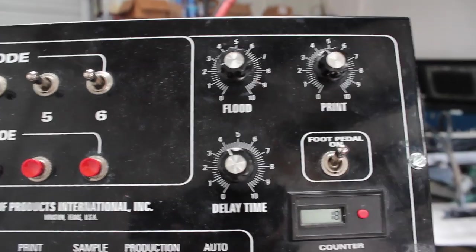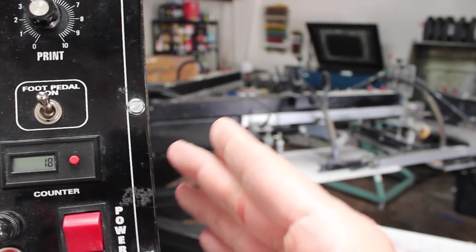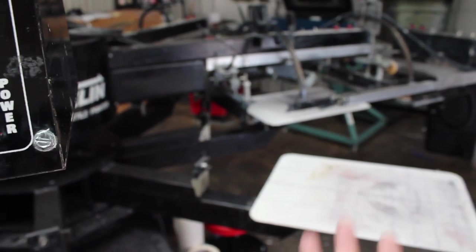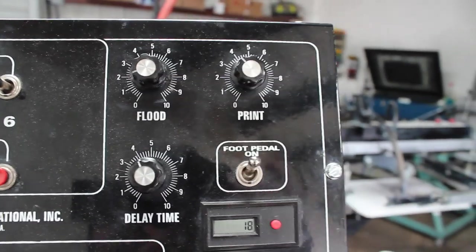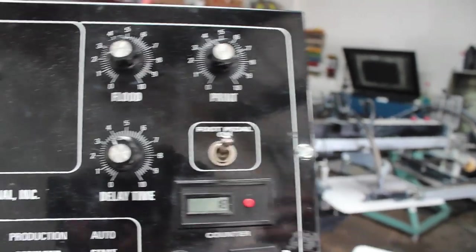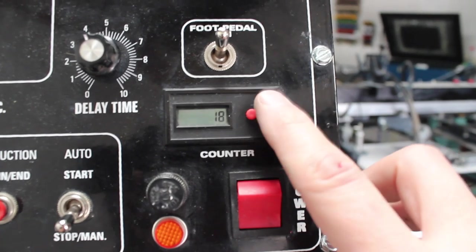These here are delay timers. The delay is the amount of time before the carousel or each station will index. The flood is the amount of given time for the squeegee to flood the ink and for the table to come up. Print is a delay for how much print time you need. If you have a larger graphic, you're working with white and you're not wanting to print it too fast just so the ink will clear the mesh, you can turn this up or turn it down.